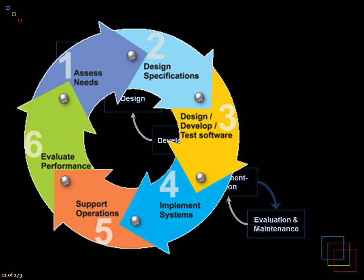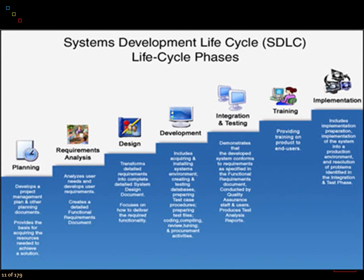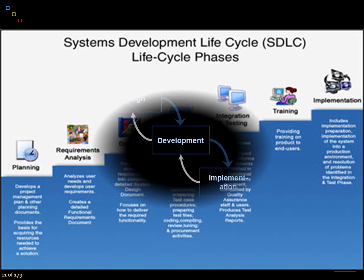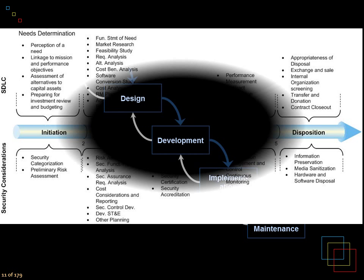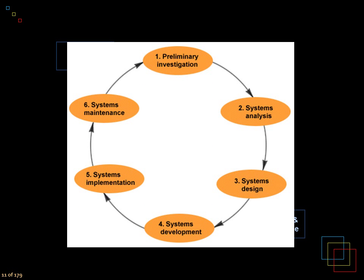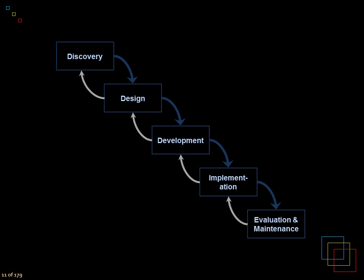There are several other versions of this methodology. For example, some have slightly different names and an extra phase, others have seven phases with different names but the same ideas, and some have only five stages. There are just so many variations — but the waterfall model with discovery, design, development, implementation, evaluation, and maintenance is the one we're using.